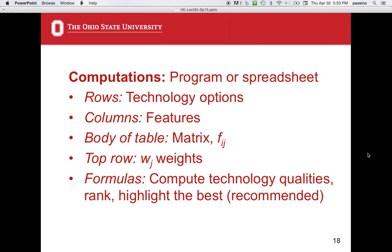For computations, you can use a computer program or a spreadsheet. The rows of the spreadsheet correspond to technology options, the columns to features, and the body of the table is the matrix F_IJ. The top row holds the W_J weights. Formulas then compute the technology qualities, rank them, and can highlight the best — for instance by coloring it. This is extremely useful because you can change values of F_IJ and W_J and watch the rank ordering possibly change, giving great insight into the evaluation process.